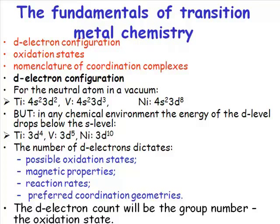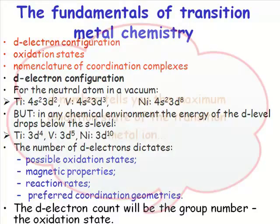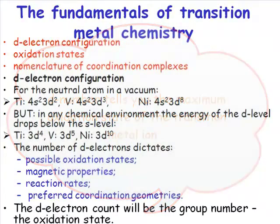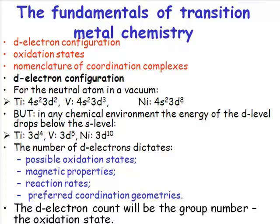ever have the oxidation state higher than the group number. So, this group number, which is telling you how many d electrons you've got in your atom, is also telling you what the maximum oxidation state is. You can have any oxidation state up to the maximum oxidation state, but you cannot have an oxidation state higher than the maximum oxidation state. So, the maximum oxidation state for titanium will be titanium 4. The maximum oxidation state for vanadium will be vanadium 5. The maximum oxidation state for chromium will be... Chromium is in group 6, and its maximum oxidation state is 6.